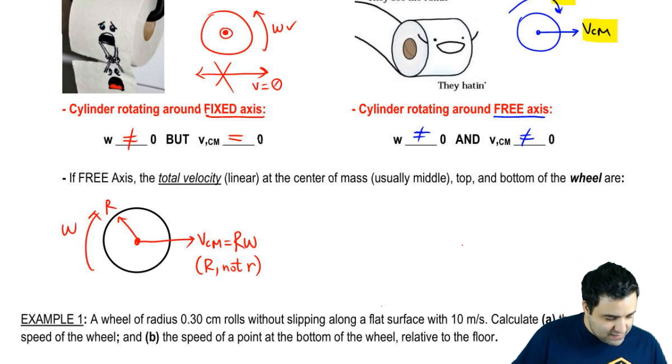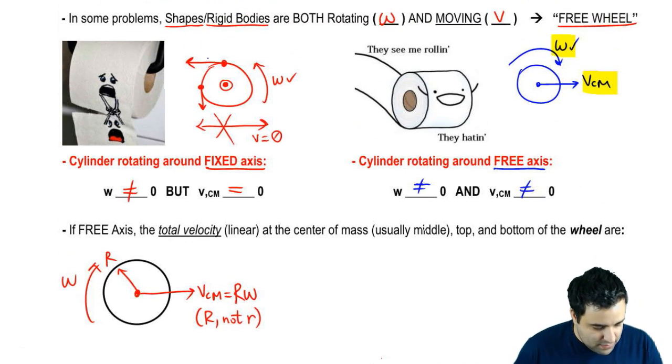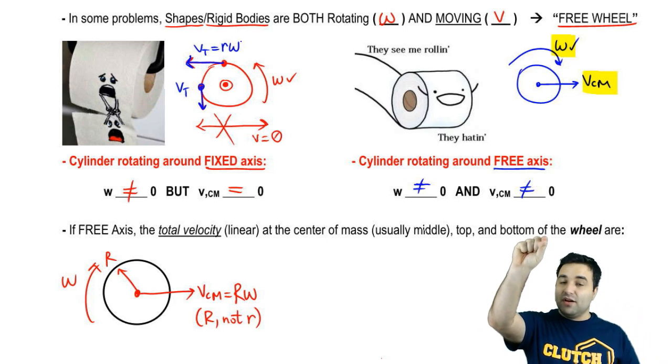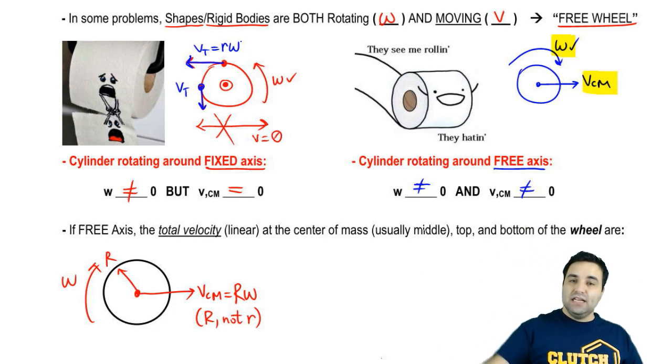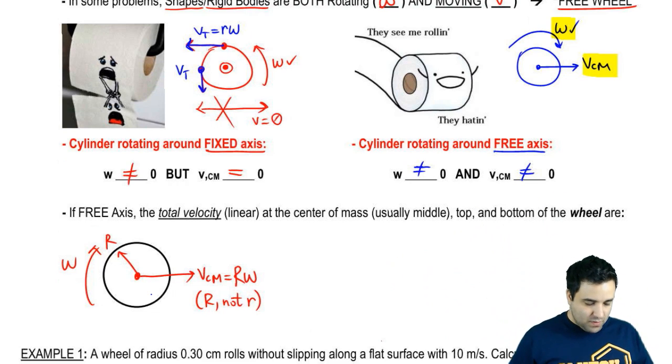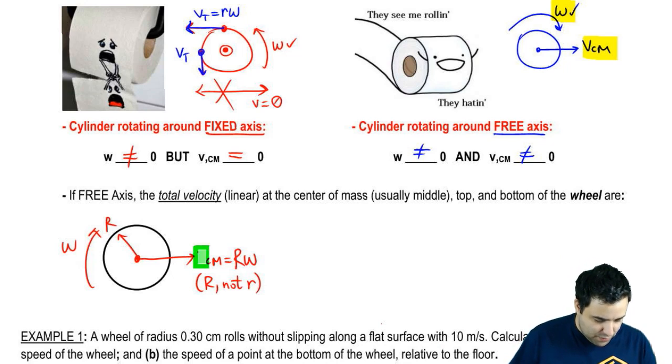And this looks very similar to what we've seen. If you have a fixed axis, the velocity tangential at an edge here or here, these are tangential velocities. Let me make them blue. These are tangential velocities. These tangential velocities are little r omega. But we're not talking about a velocity of a point at the edge or any distance from the center. We're talking about the velocity of the middle of this thing because this thing moves sideways. So this is the most important thing you need to know.